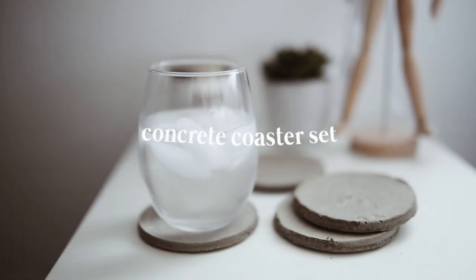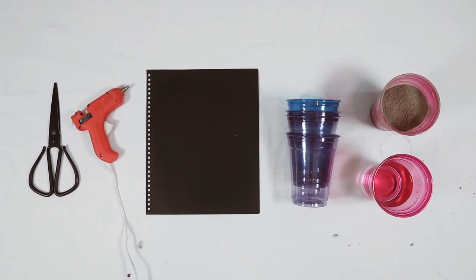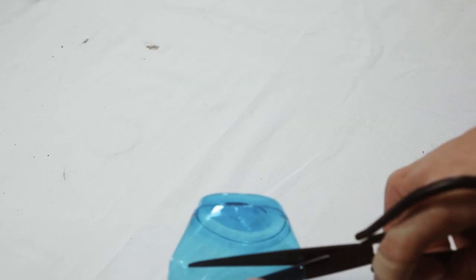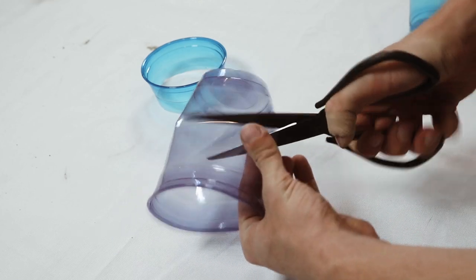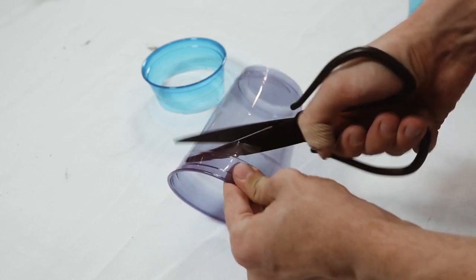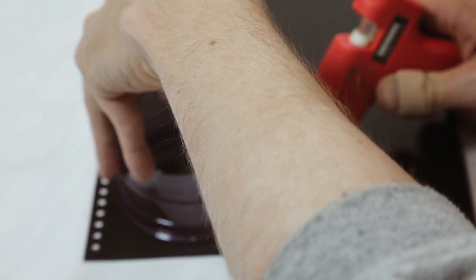This last project might be my favorite. It's a concrete coaster set. You're just going to need some scissors, a glue gun, a random piece of thick cardstock or paper, and then a couple plastic cups and your cement. So I started off by taking four of these plastic cups and cutting them as shown. So I just kind of created an initial cut inside of the cup and then I cut all the way around just to have this top portion.